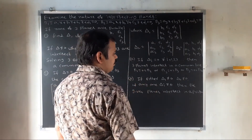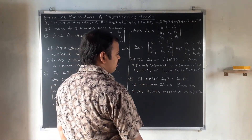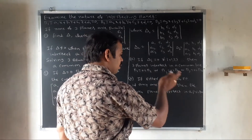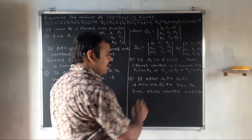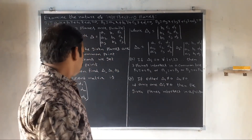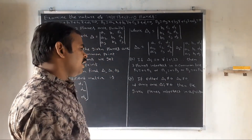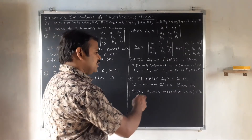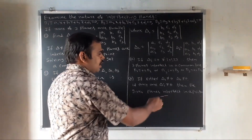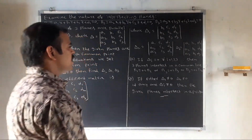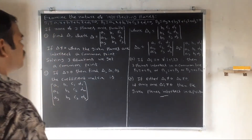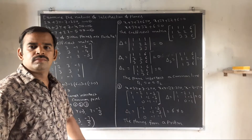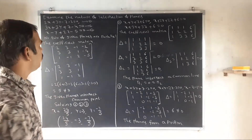If delta equals zero but any one of delta1, delta2, or delta3 is not equal to zero, then the given planes intersect to form a prism. The three equations together describe the prism geometry. Let us now look at specific problems.